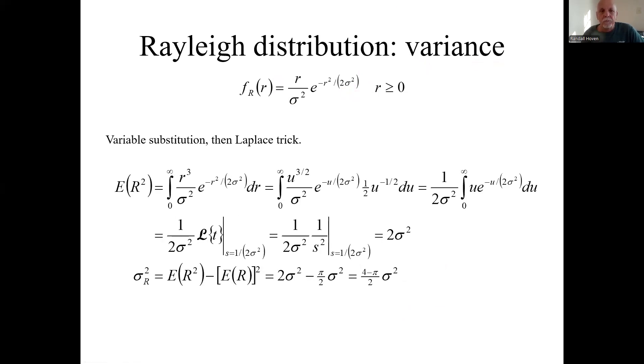Now let's find the variance. So that means the expectation we need to find the second moment. Let's find E of r squared. So that's multiplied by r squared. We already had an r, so now we have an r cubed. We'll let u equals r squared again. We'll do some variable substitution. So now we have to evaluate this integral.